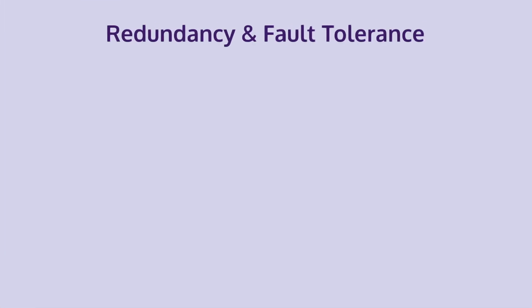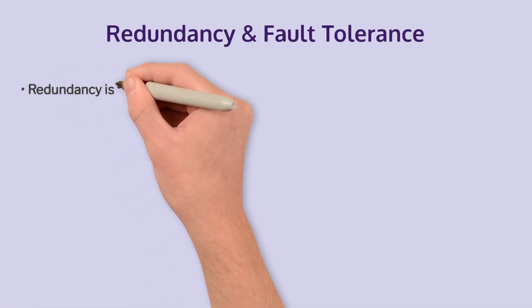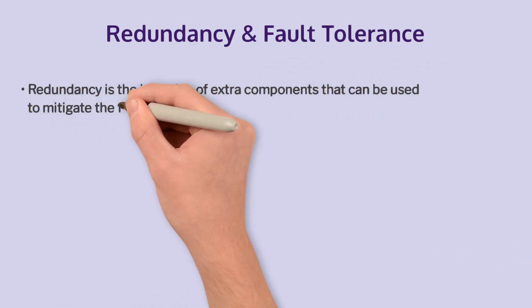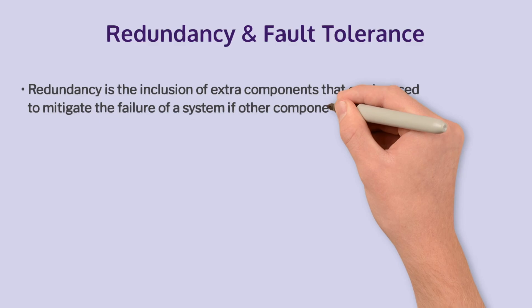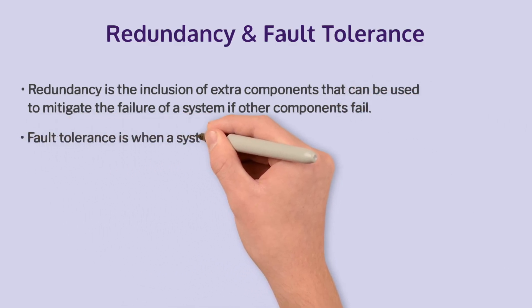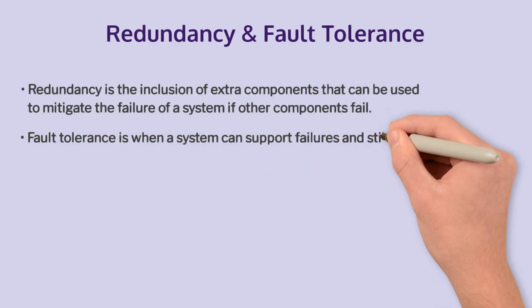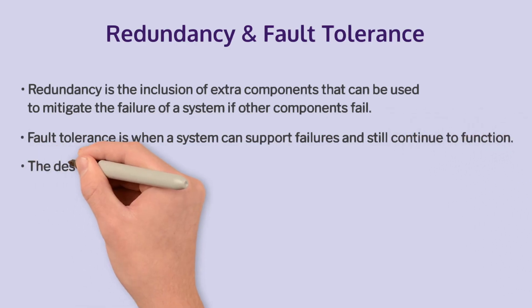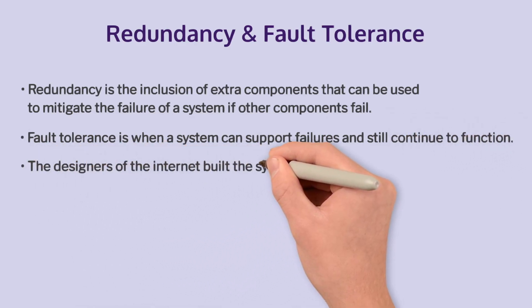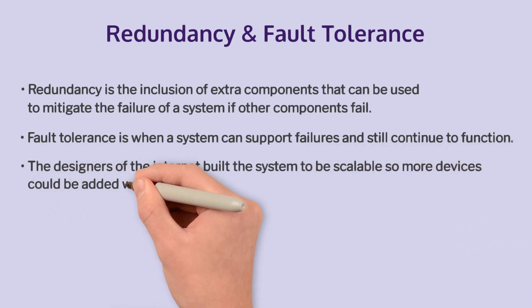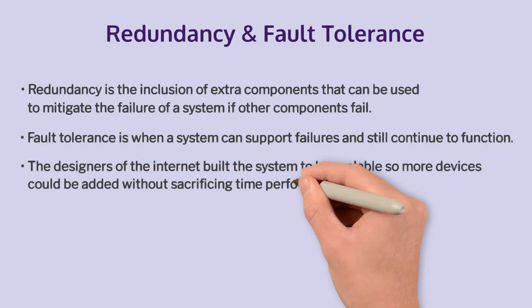To recap Redundancy and Fault Tolerance: Redundancy is the inclusion of extra components that can be used to mitigate the failure of a system if other components fail. Fault Tolerance is when a system can support failures and still continue to function. The designers of the Internet built the system to be scalable, so more devices could be added without sacrificing time performance.